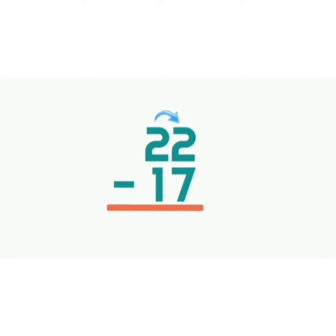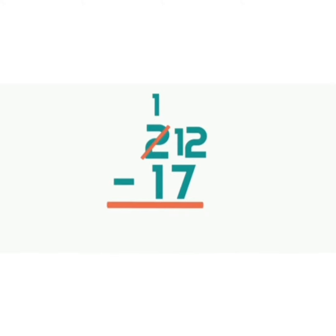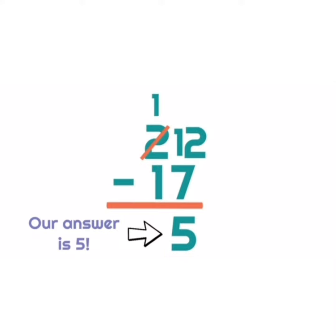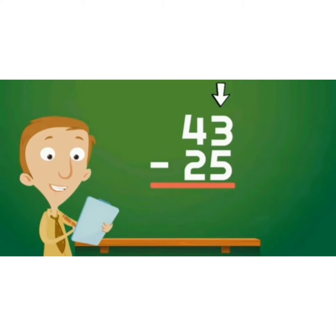22 minus 17. All you have to do is borrow 1 from the tens column. 2 minus 1 equals 1, so the number in the tens column becomes 1. The 1 you borrow goes to the ones. 12 minus 7 equals 5, and 1 minus 1 equals 0. So the answer is 5.